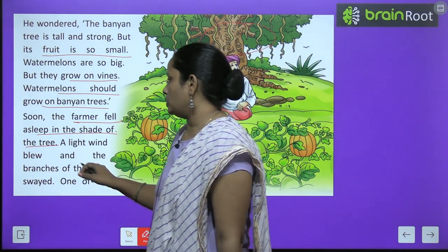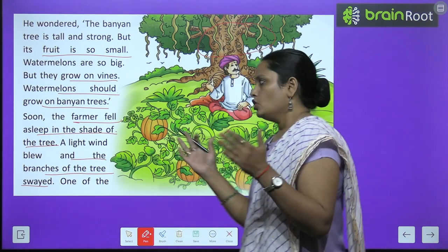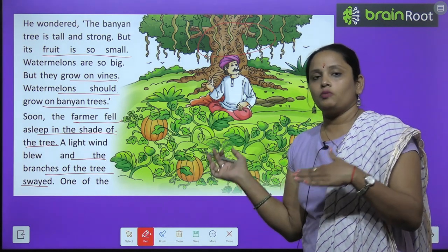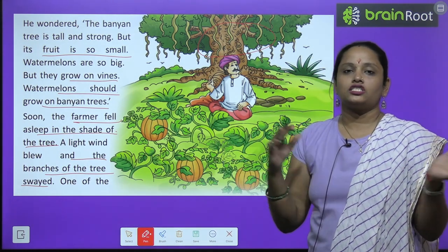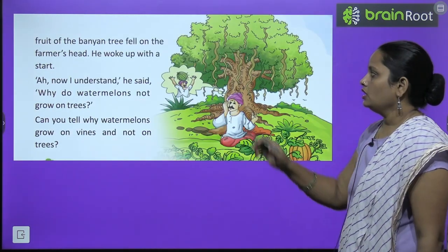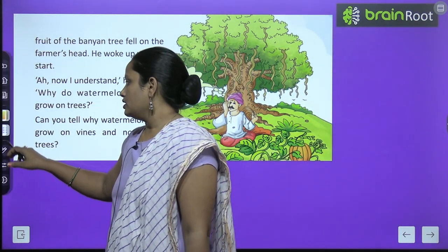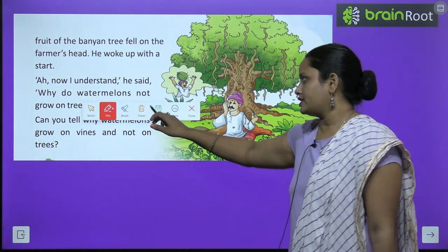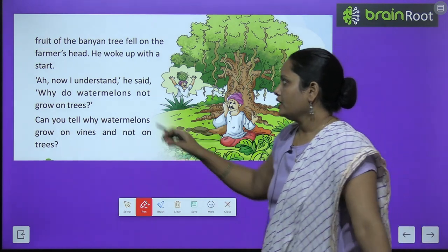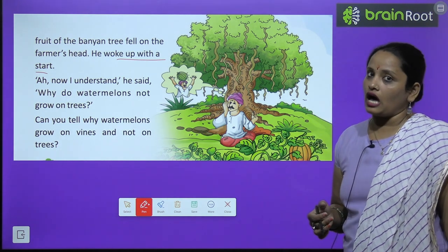The branches of the tree swayed — swayed means to move slowly. A light breeze blew, so the branches of the banyan tree moved. One of the fruits of the banyan tree fell on the farmer's head and he woke up with a start.